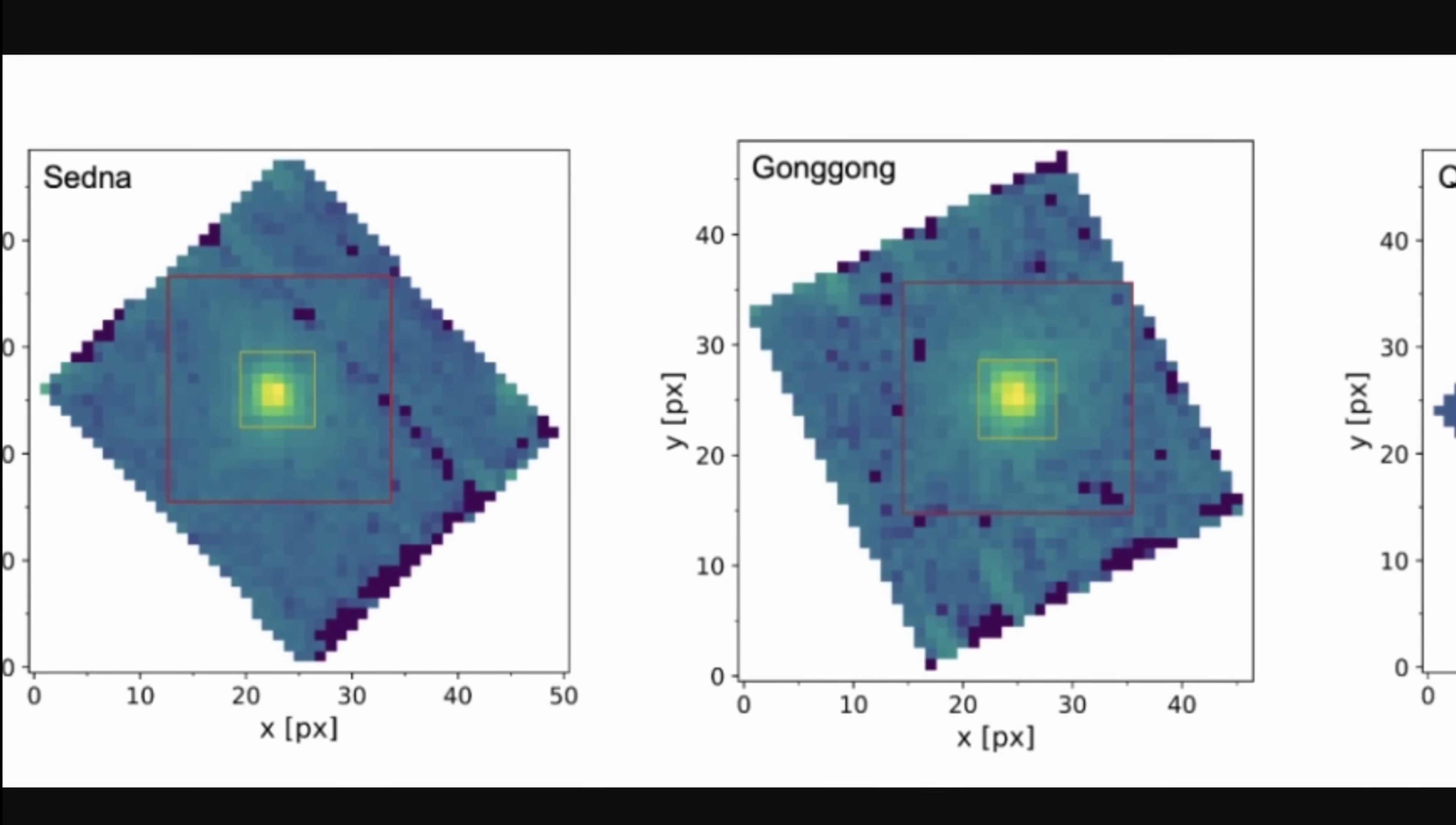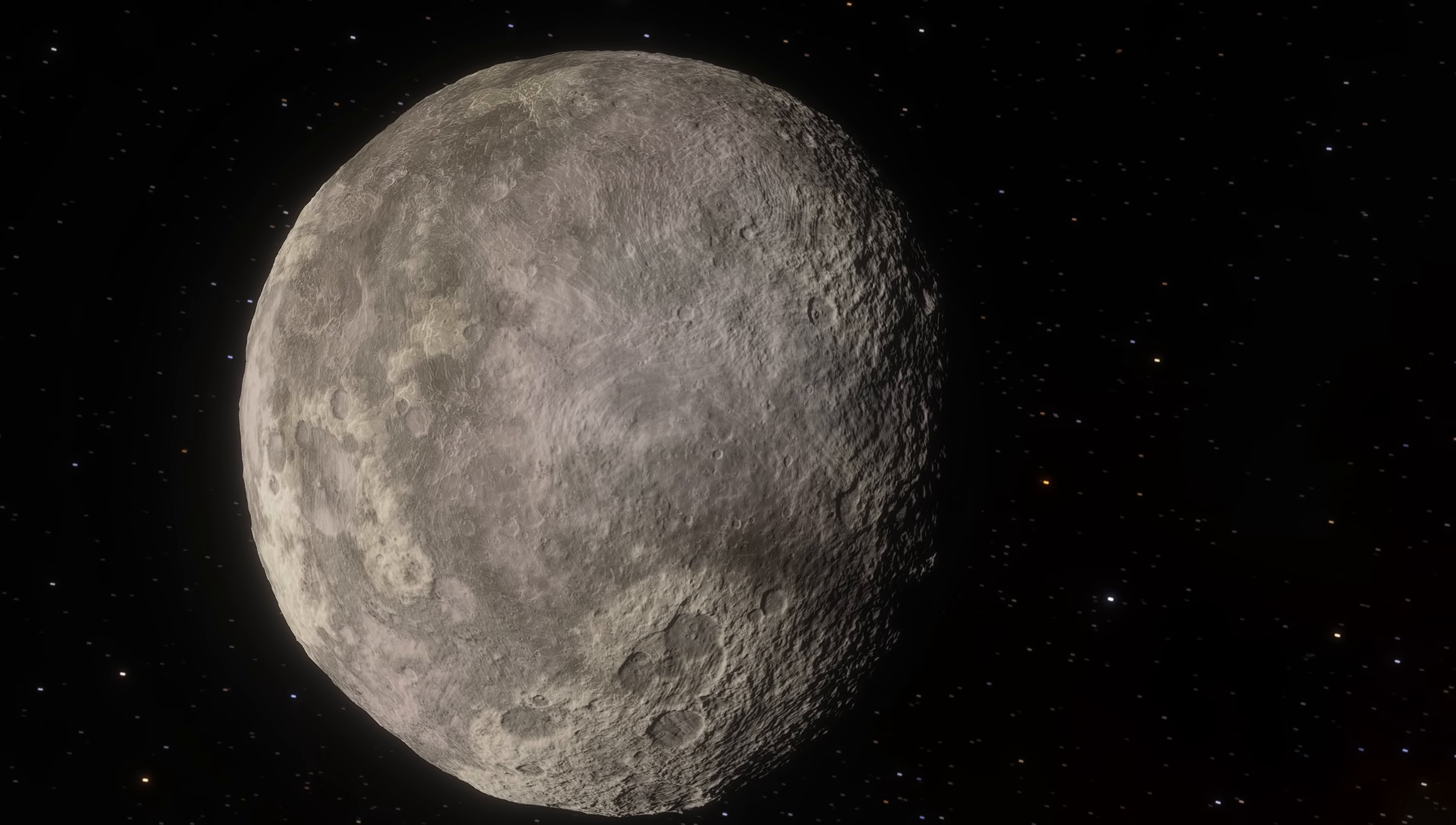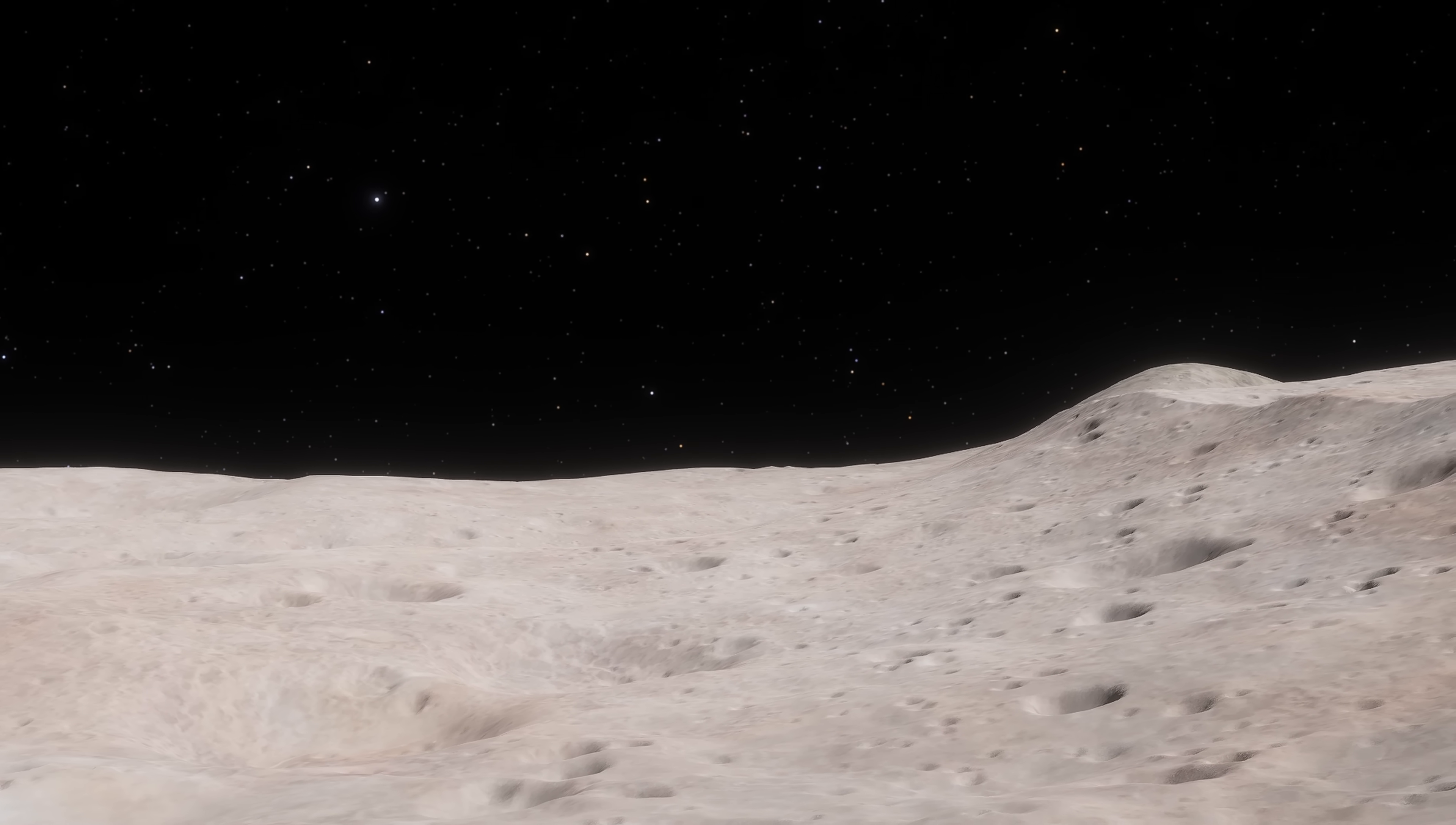Sedna, along with Gong Gong, have extremely elliptical orbits, approaching the sun relatively close and then moving away from the sun relatively far. So both of these objects spend most of the time far far away from the sun. Kovar though is a little bit different. Its orbit is more circular. And so its surface gets irradiated a little bit different from everything else.